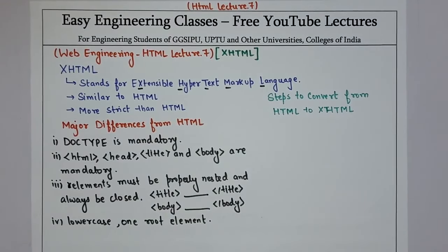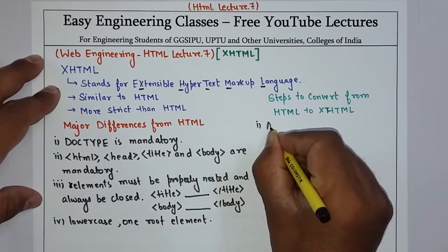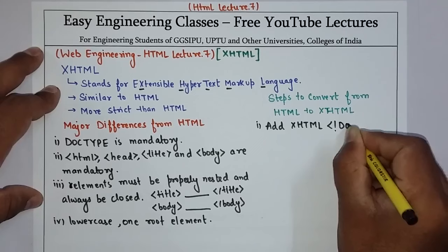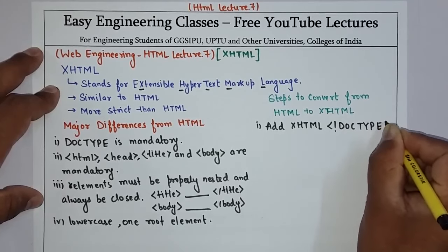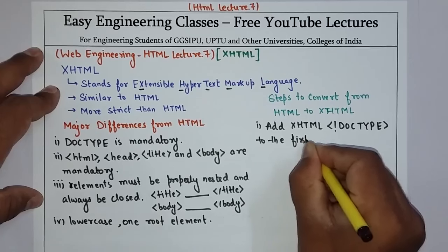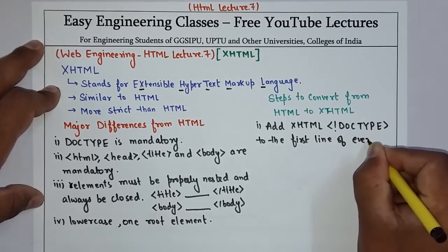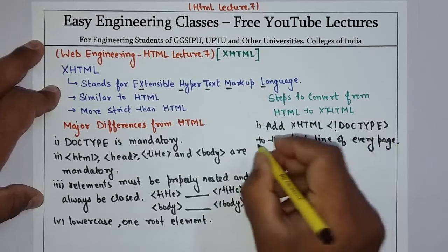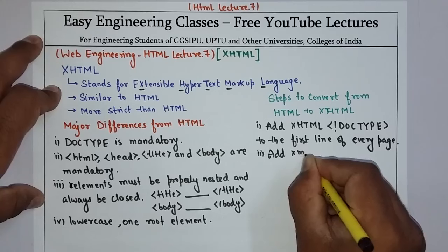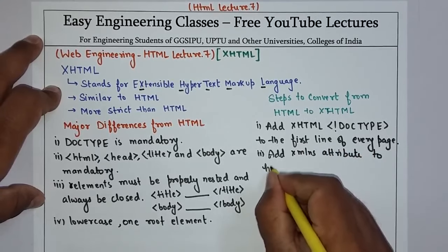Now we will see the steps to convert HTML to XHTML. The first step is to add the XHTML DOCTYPE to the very first line of every page. The second step is to add the XHTML attribute to the HTML element of every page.